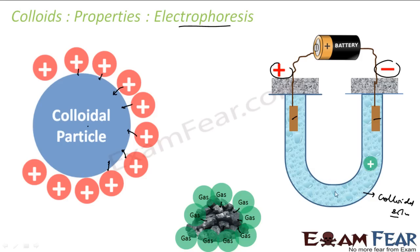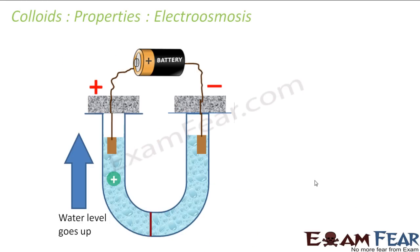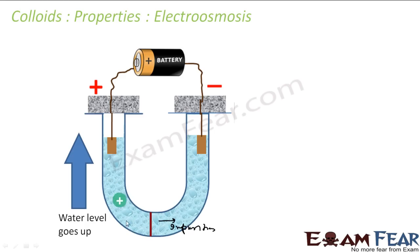Now, if the movement of these particles is restricted using a membrane — the same type of animal membrane that allows impurities to pass through but blocks colloidal particles — then when particle movement is prevented, it is observed that the dispersion medium, for example water, begins to move in the opposite direction. This phenomenon is called electro-osmosis.